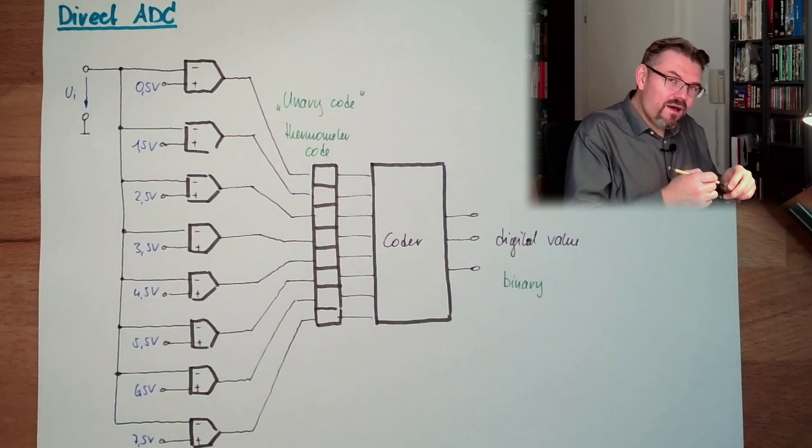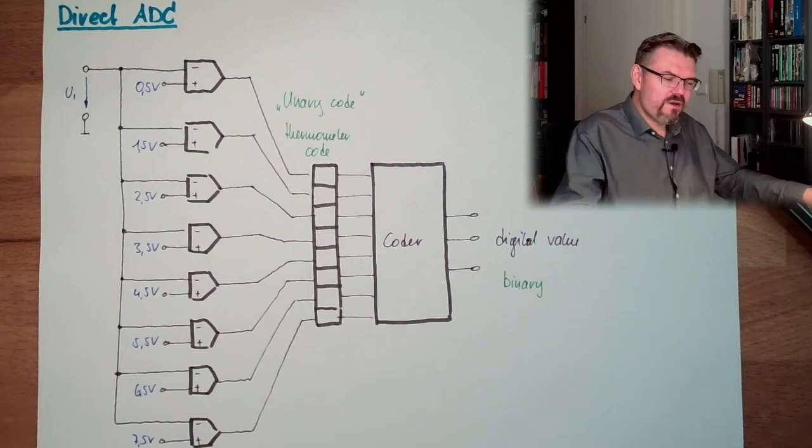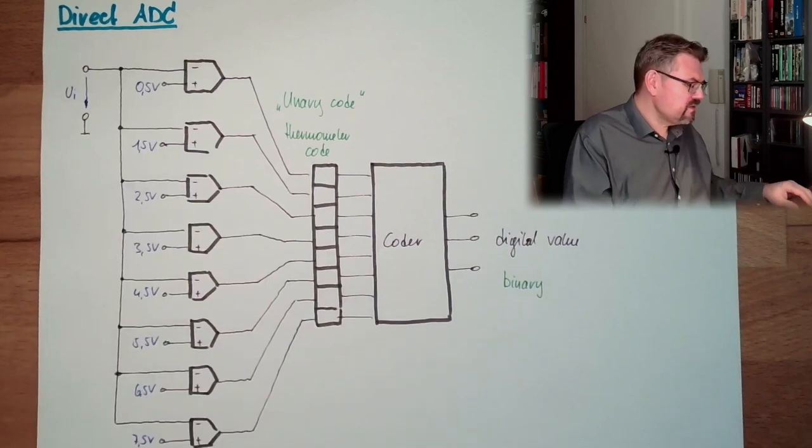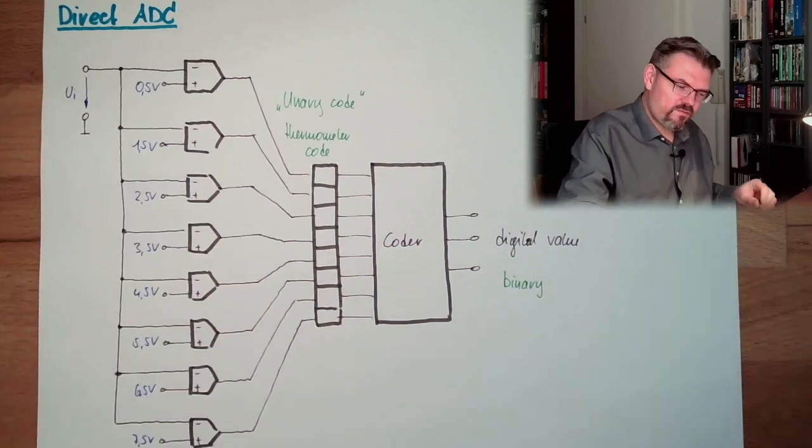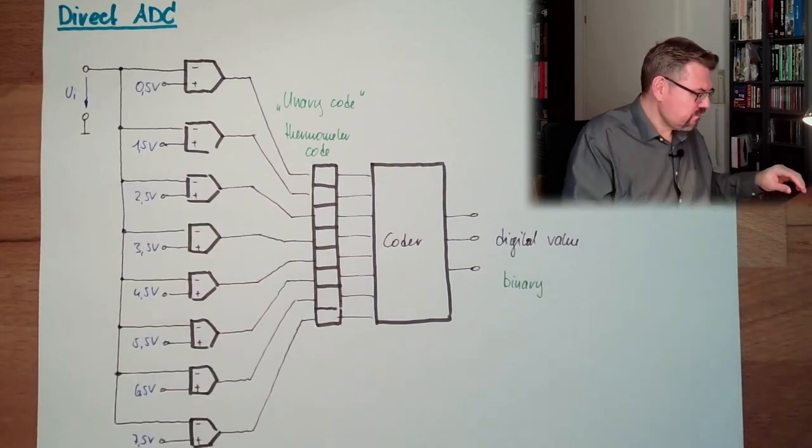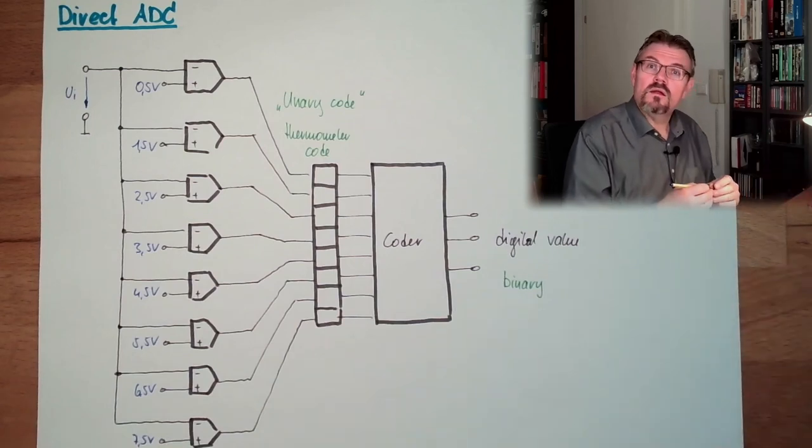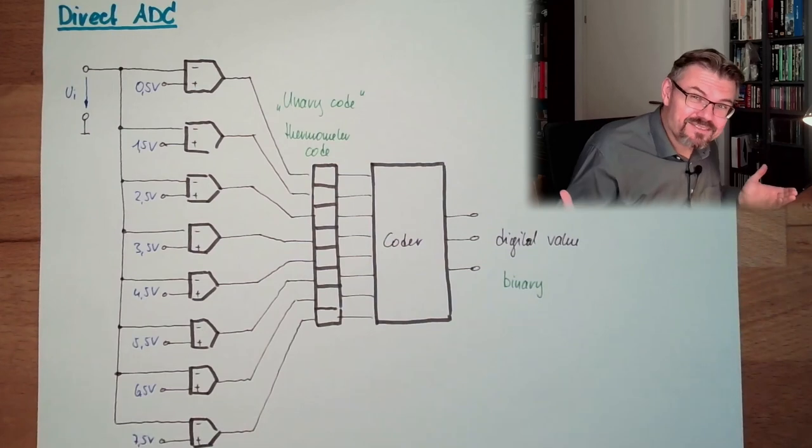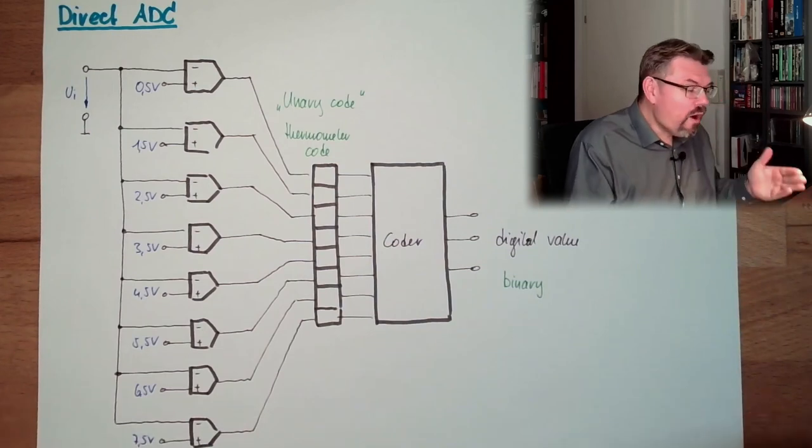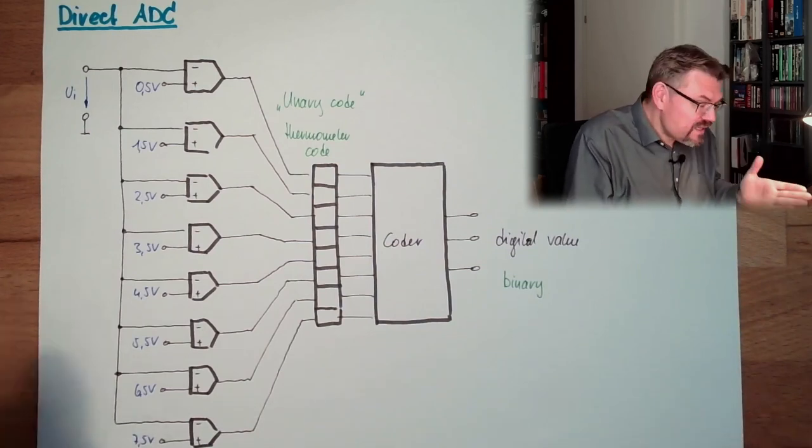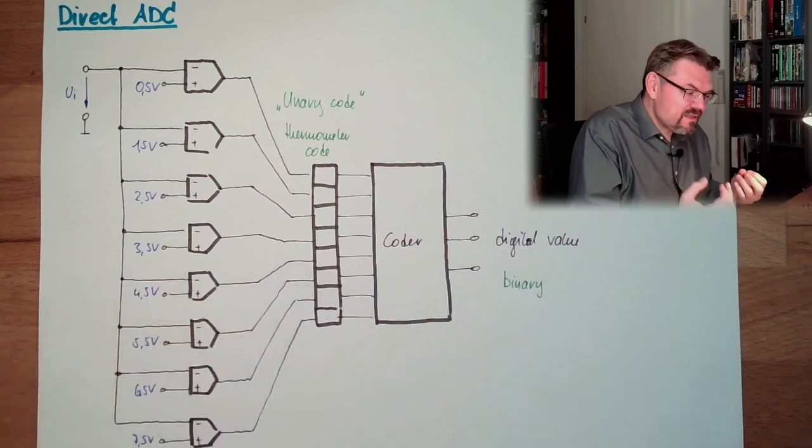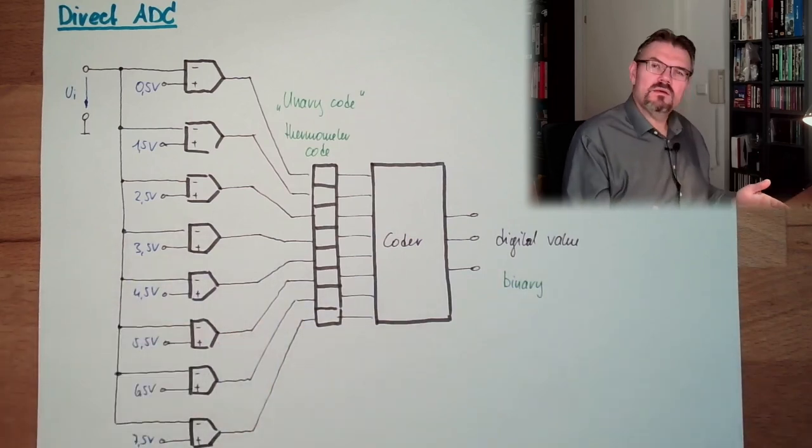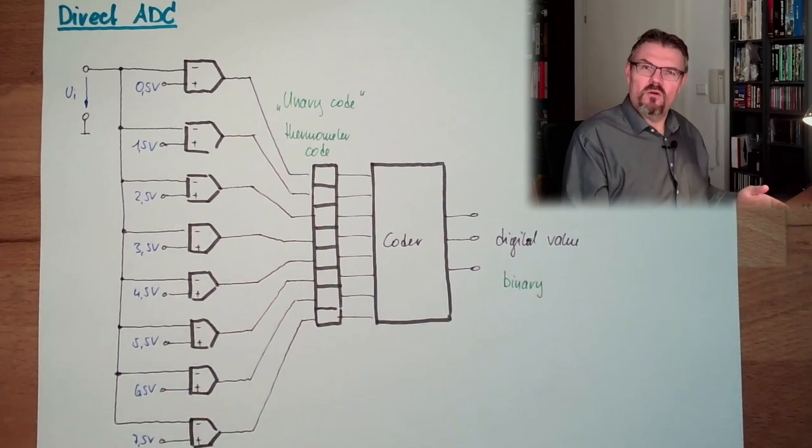Hello? A lot of effort. Imagine, if you have a 12-bit ADC, then we would have 4,095 comparators. Tremendous effort. But you see, instant. It's almost instant. I mean, it's just the latch times of those elements. Instant. Result.